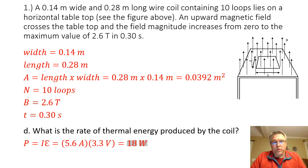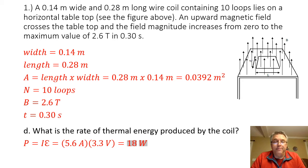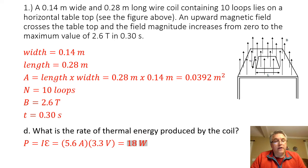Part D asks: what is the rate of thermal energy produced by the coil? We look at thermal energy in terms of the power produced by the coil. According to Ohm's Law, power equals current times voltage — P equals IV — and we replace voltage with our induced EMF, so the formula reads P equals I times epsilon. Multiplying the induced EMF by the current, I get a power rating of 18 watts.